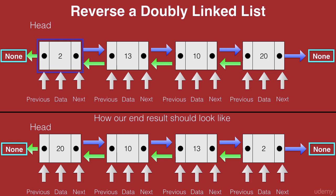Let's take the head node, the node with data 2. If you look at this node in the end result, the next of 2 points to none and the previous of 2 points to 13. But in our existing list, the next of 2 points to 13 and the previous of 2 points to none. The pointers are interchanged.